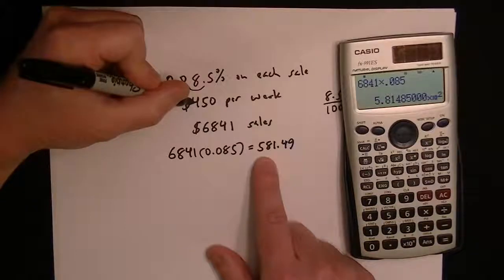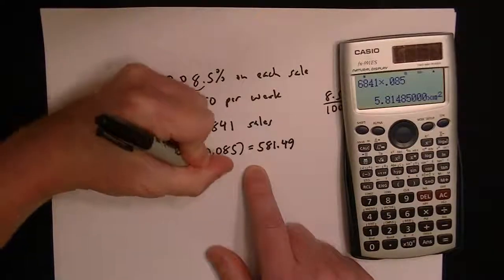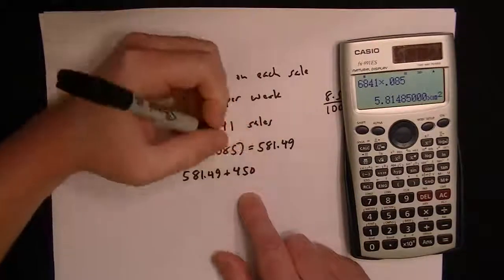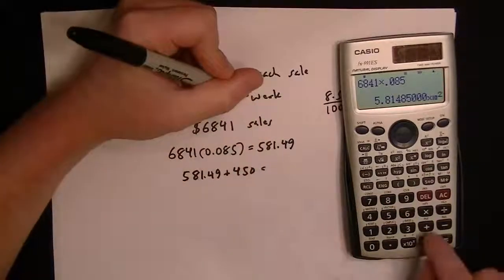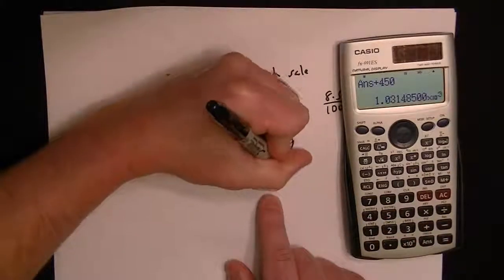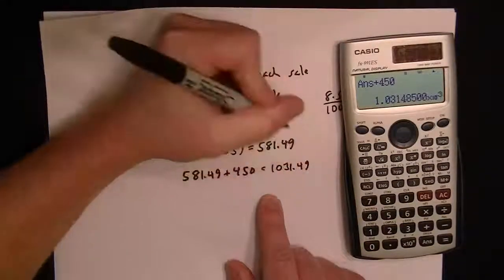Well you've got to remember that he got his base salary of $450. So we have to take the money he gets from his sales plus his base salary that he gets no matter what. And so we add those up and the answer is $1,031.49.